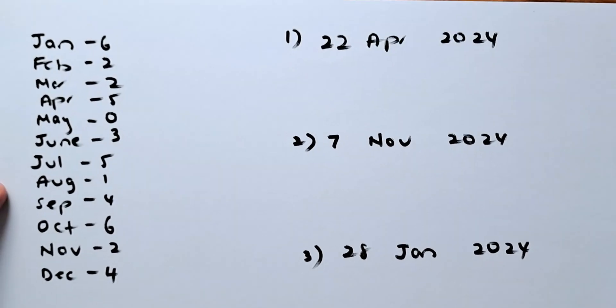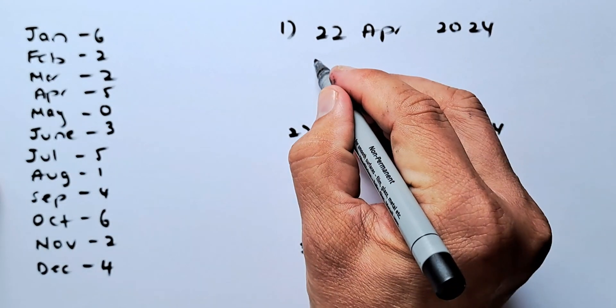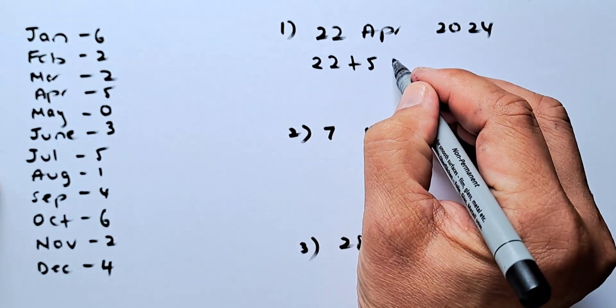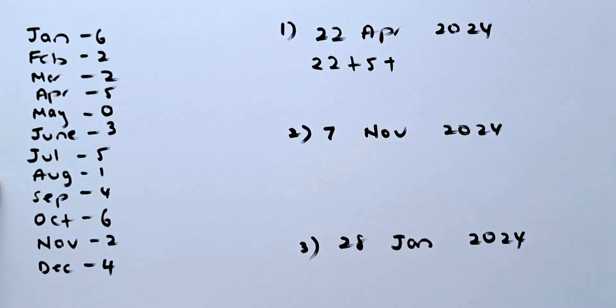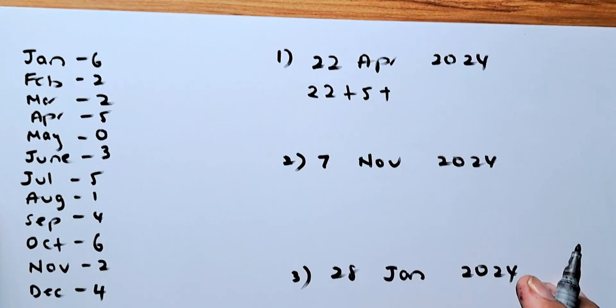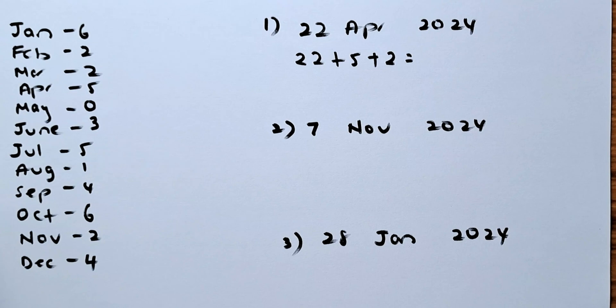Let's look at the example again. The first example is 22nd of April 2024. So what you do, you're going to put 22. April, look for it, is 5. And April is after January, so you're going to add 2. So April, you're going to add 2. And you're going to add the total now.